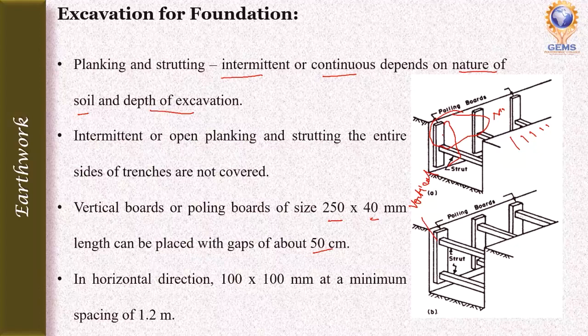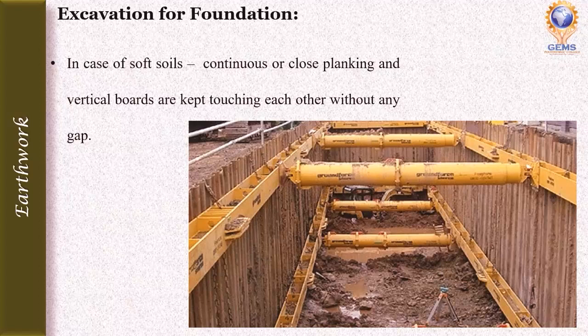These vertical boards can also be kept in a horizontal direction. If used horizontally, they have a dimension of 100 by 100 mm at a minimum spacing of 1.2 meters. In case of soft soil, we use continuous or close planking as shown in the diagram — the vertical boards are kept touching each other without any gaps.